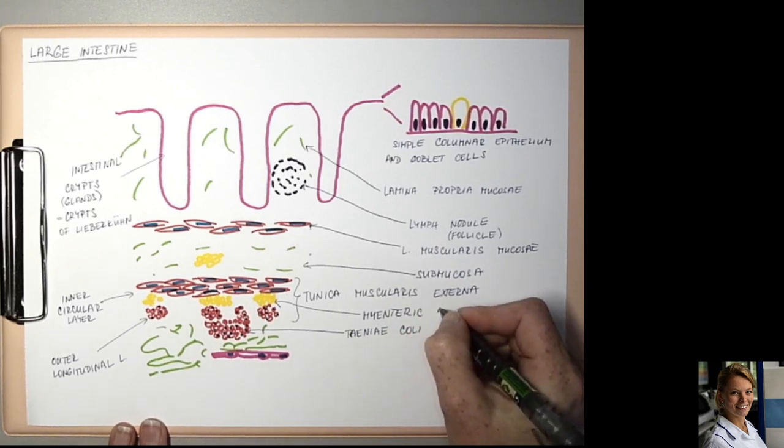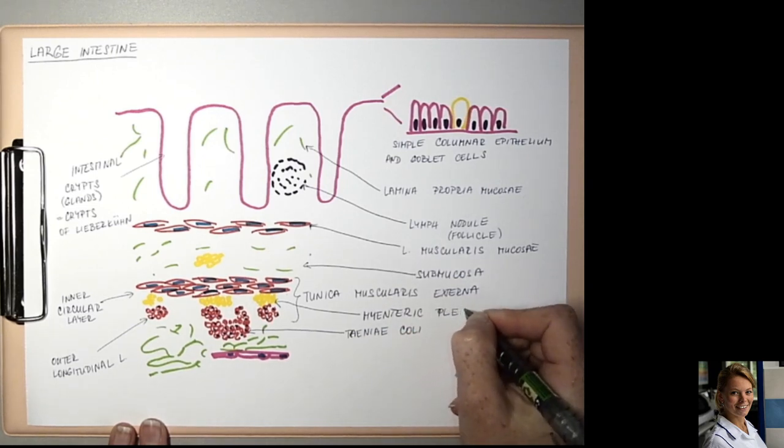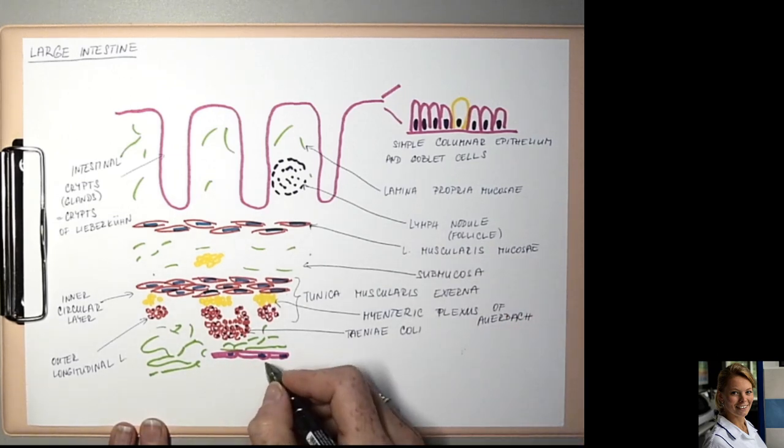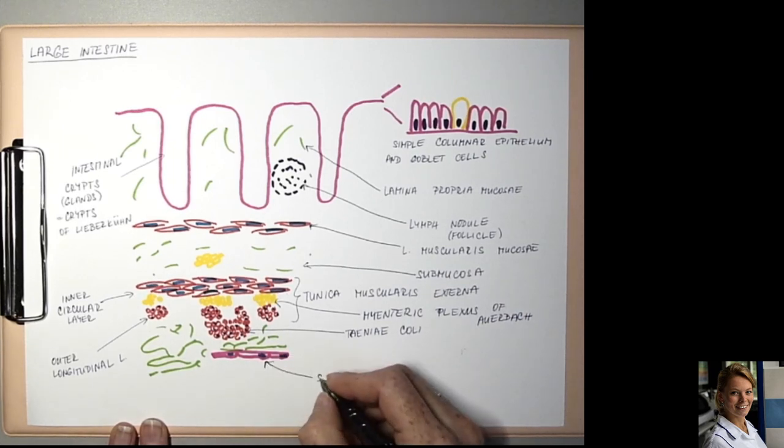Myenteric plexus of Auerbach, and last layer is serosa.